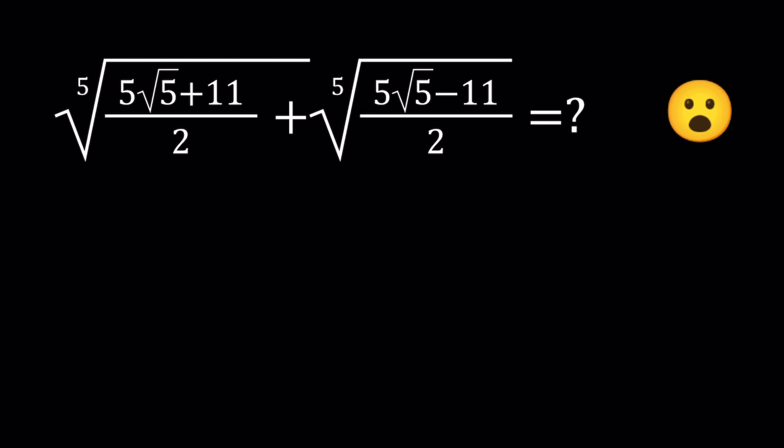In some sense we could also call this a golden radical somewhat - you'll notice why. We've seen a lot of sums of square roots and cube roots, but this time we have fifth roots.